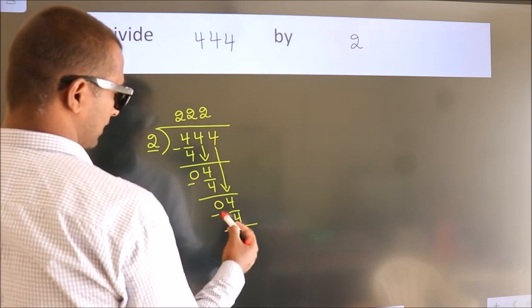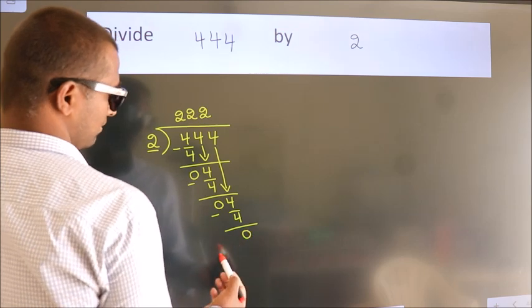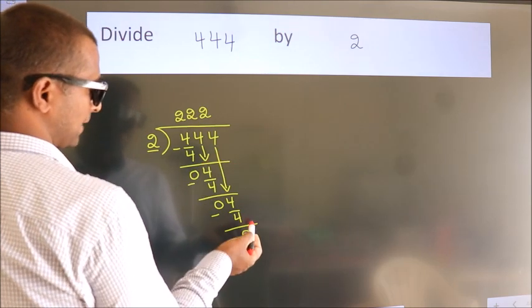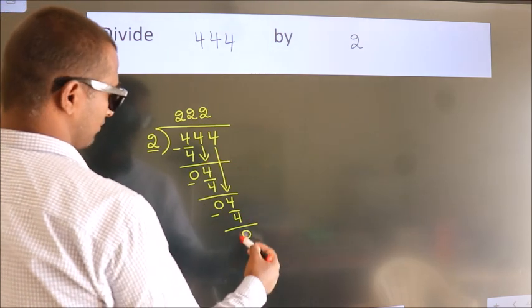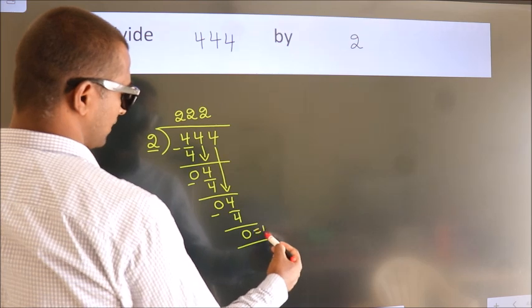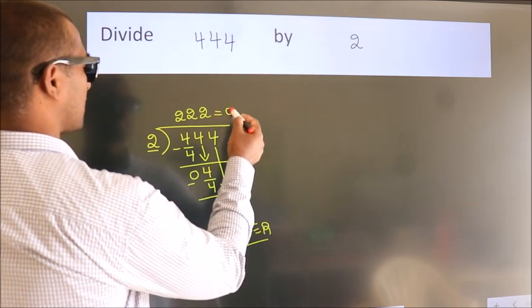Now we subtract. We get 0. No more numbers to bring down. So we stop here. This is our remainder. This is our quotient.